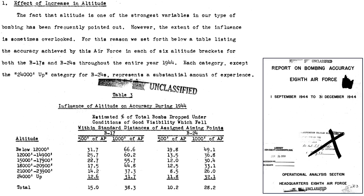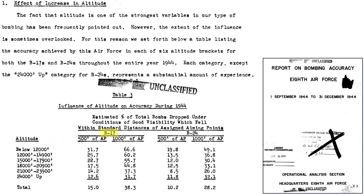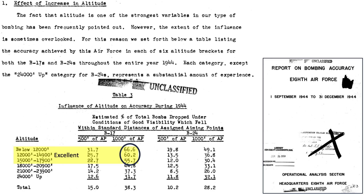A 1945 Headquarters 8th Air Forces document titled Report on Bomb Accuracy shows how bomb accuracy trends with altitude. Bombing altitude is a strong predictor of bomb accuracy. This table outlines the percentage of bombs that fell within 500 or 1,000 feet of the aim point for the B-17 or B-24 bombing platforms, based on data collected in 1944. Bomb accuracy decreases with increasing altitude. Per 8th Air Force doctrine, if 50% of bombs fell within 1,000 feet of the aim point, accuracy is considered excellent; less than 15% is unsatisfactory. The B-17 provides excellent bombing results below 18,000 feet; no excellent accuracy is shown for the B-24.